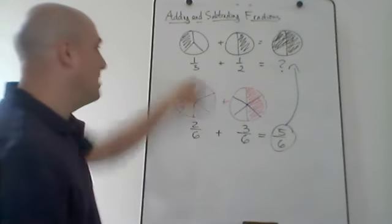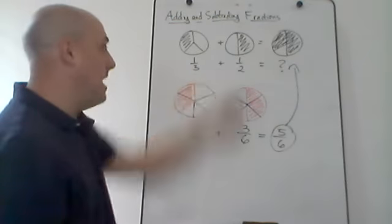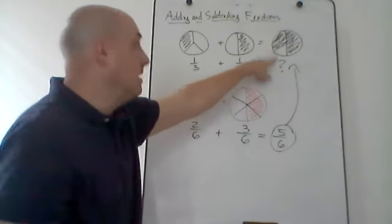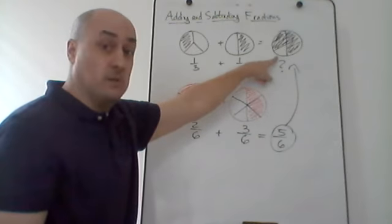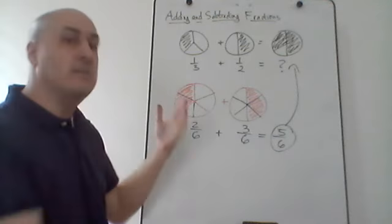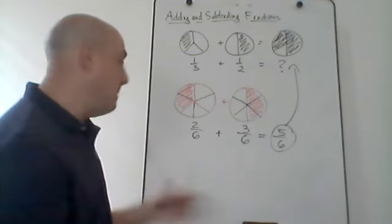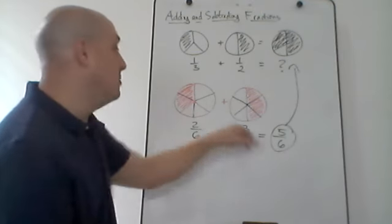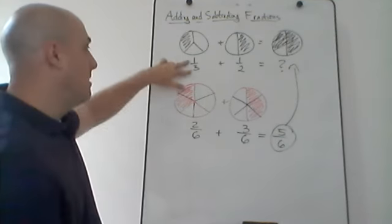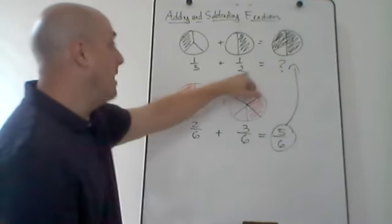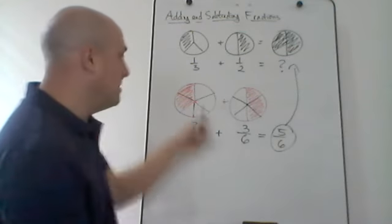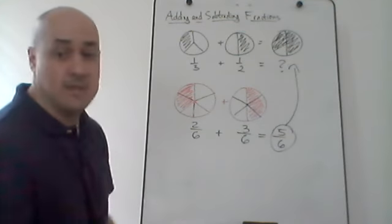A common mistake people make is saying one-half plus one-third: add the ones to get two, add the three and two to get five, giving two-fifths. But if you understand what two-fifths of a circle looks like, this does not look like two-fifths — it's actually five-sixths. So to add those fractions, you need to unsimplify them, get them to a common denominator, and then add the numerators. In this case, for one-third I cut the pieces into two; for one-half I cut the pieces into three — using each other's denominator.